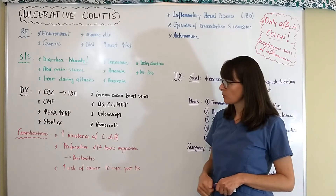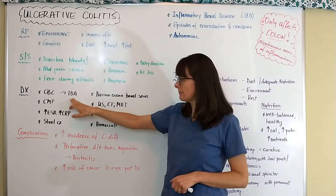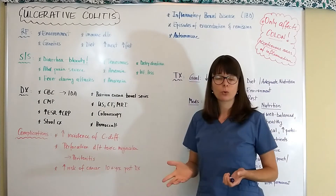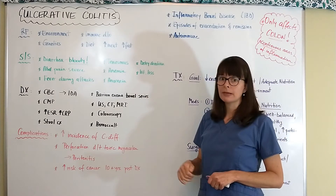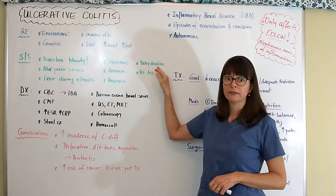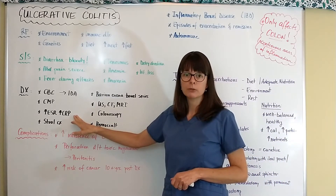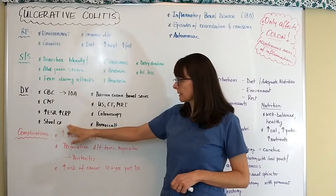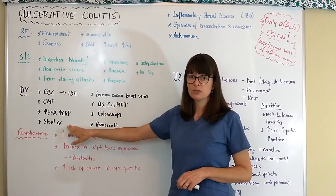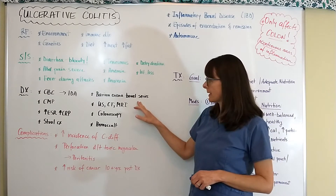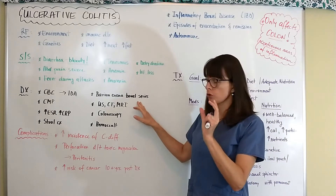As for diagnostic tests, you want to check a CBC — many times patients will be iron deficient with iron deficiency anemia. Check their CMP for fluid and electrolyte imbalances and to assess kidney and liver function, since dehydration can affect the kidneys. ESR and CRP inflammatory markers will be elevated. Stool cultures may be needed to rule out infectious causes of diarrhea, and a barium enema bowel series can be used to visualize the colon with contrast.